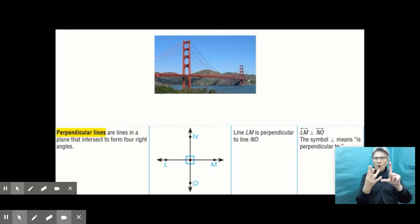And I could write that by writing line LM, which we know how to write. And that symbol right there that looks like an upside down T, that symbol means is perpendicular to. I'd write line LM is perpendicular to line NO. It's nice that we have that symbol because perpendicular is a long word to spell.